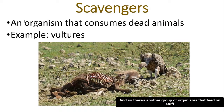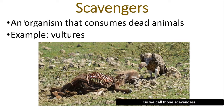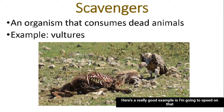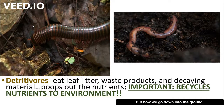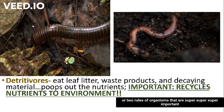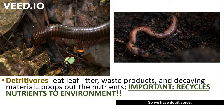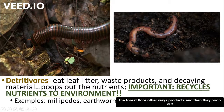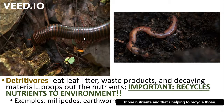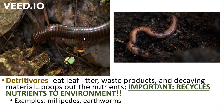There's another group of organisms that feed on things that are dead rather than living — we call those scavengers. A vulture is a great example, feeding on the dead carcass of another animal. Then, going down to the ground, there are two more really important groups that help recycle nutrients back into the environment. We have detritivores — like earthworms and millipedes — that eat leaf litter, which is the dead leaves covering the forest floor, along with other waste products, and then they excrete those nutrients, recycling them back into the environment.